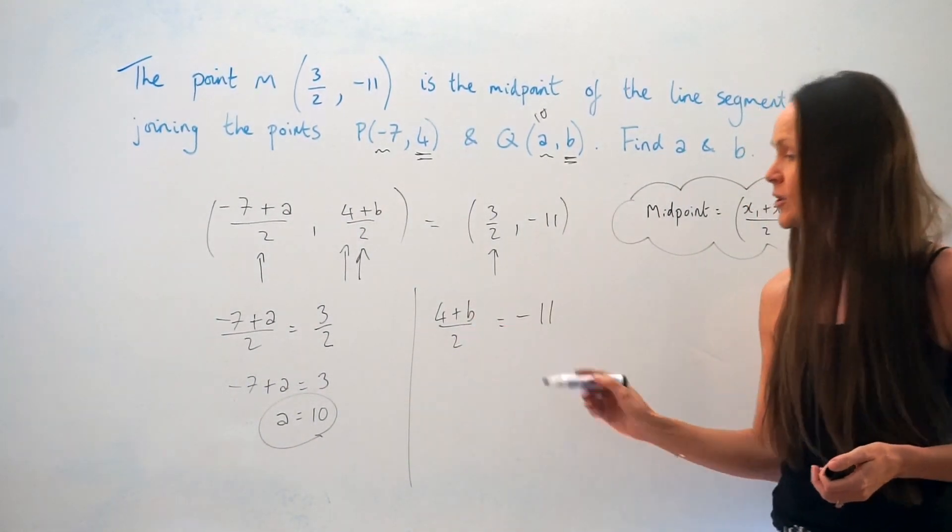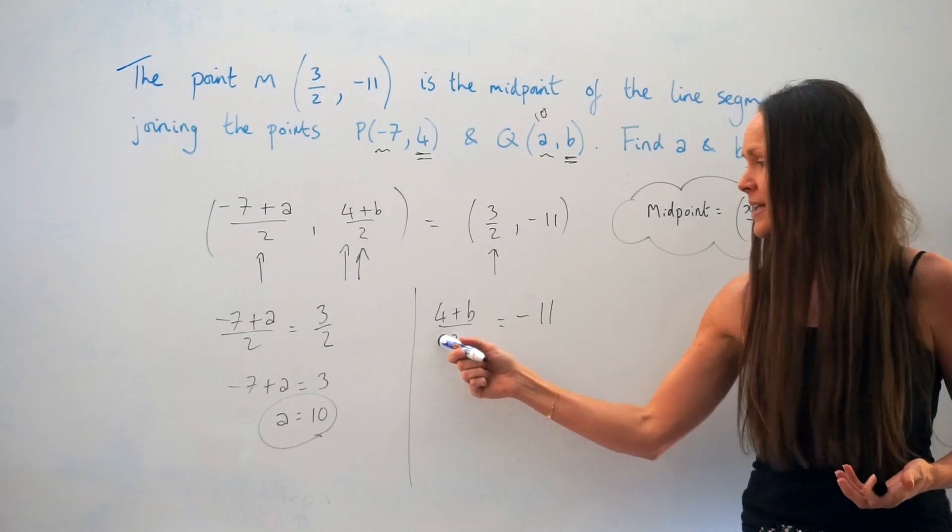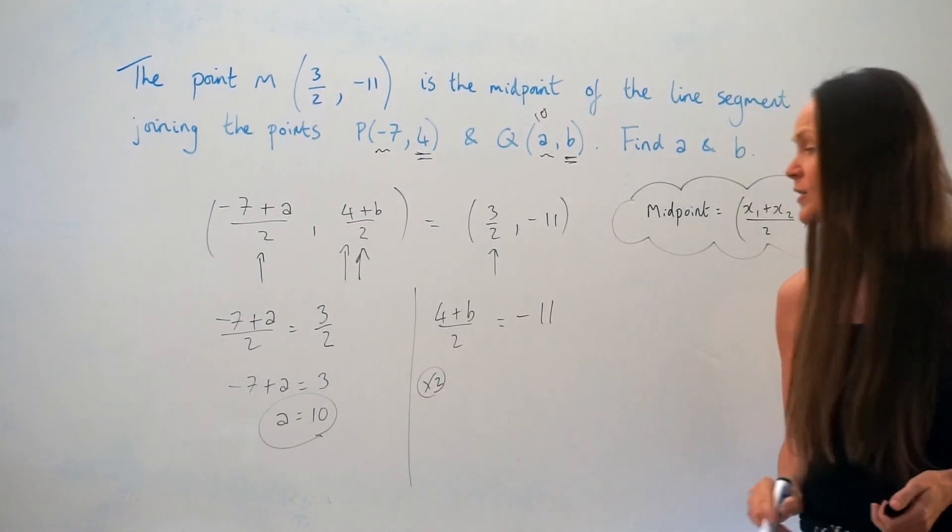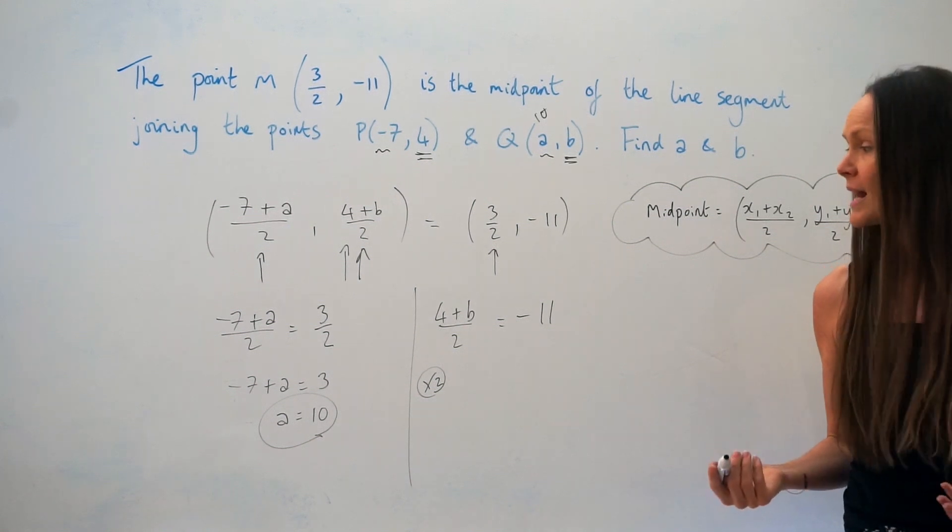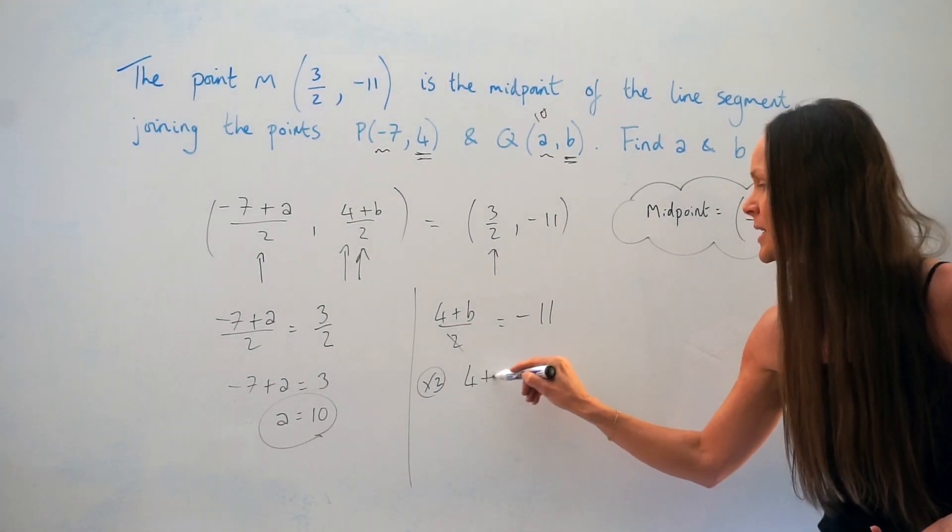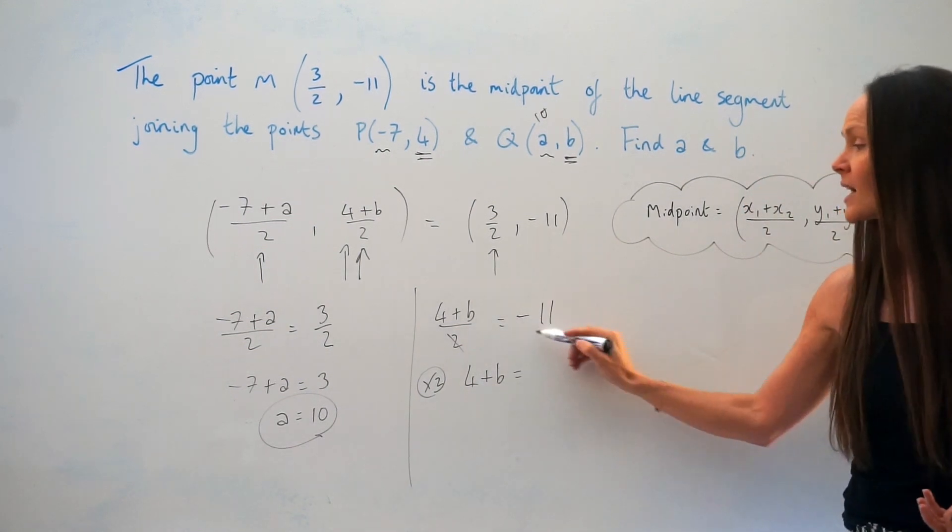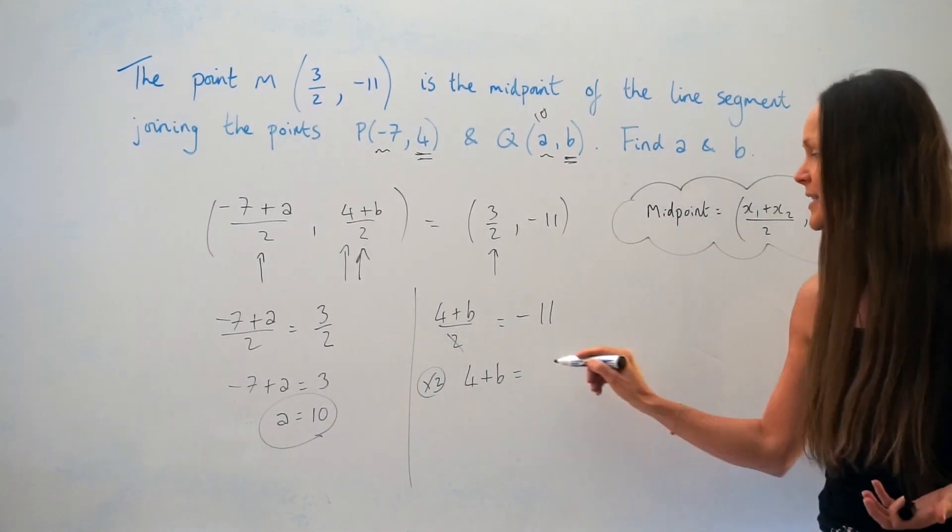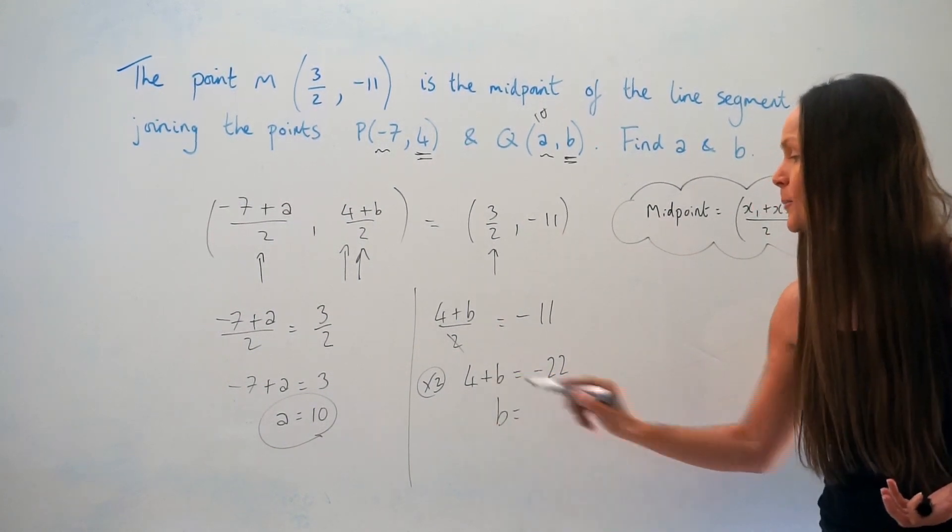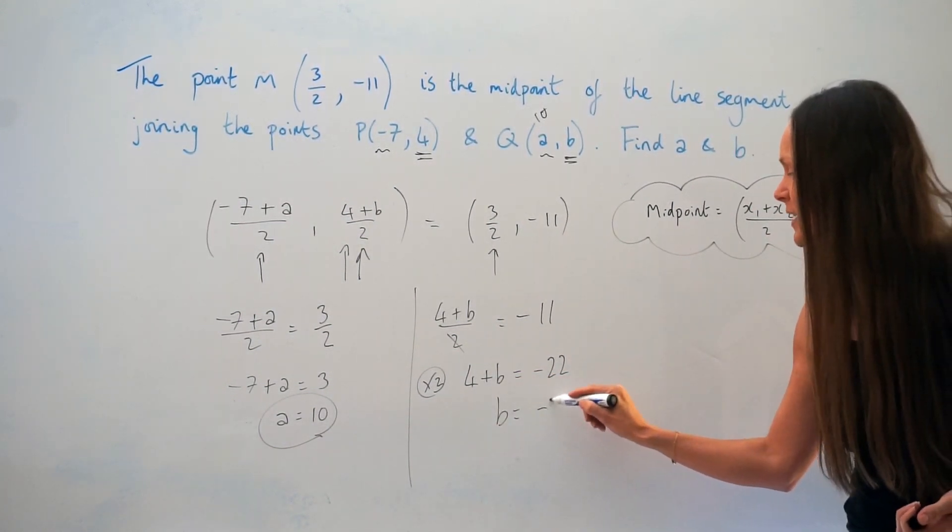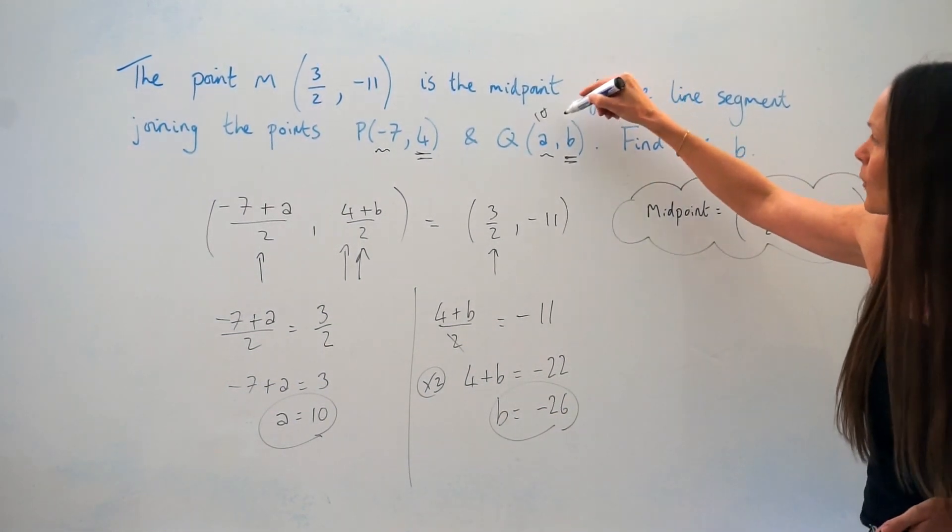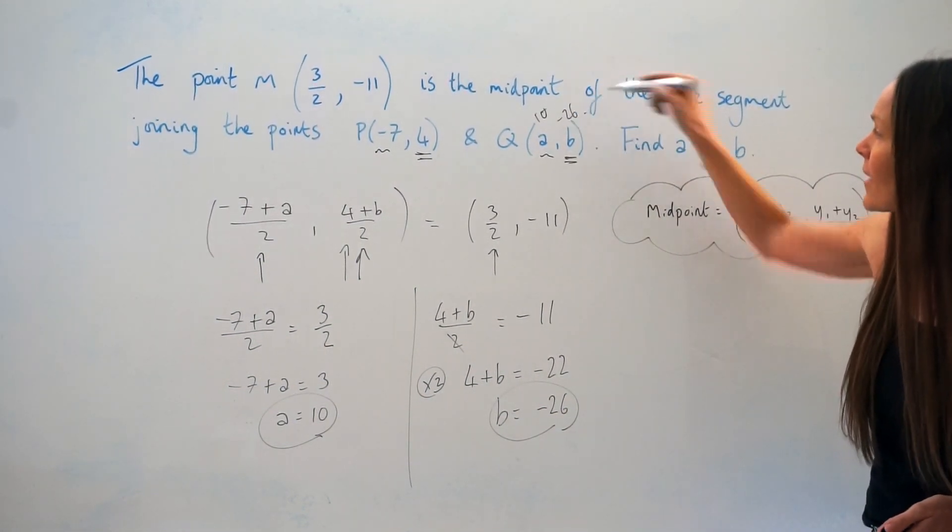Now, if I'm solving this equation, first I want to get rid of this fraction here. So to do that, I'm going to multiply everything in the equation by 2. So if I multiply the left-hand side by 2, this cancels, and I'm left with 4 plus B. On the right-hand side, if I multiply by 2, I've got negative 22. And then all I need to do at the end is subtract 4 on both sides, which gives me negative 26. So that is the y coordinate of Q. And that's it.